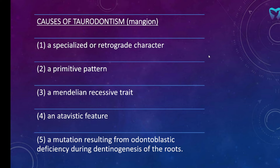The causes of taurodontism according to Mangion include: a specialized or retrograde character, because it used to happen in old times in Neanderthals, so it is a primitive pattern. It is also a Mendelian recessive trait. An atavistic feature, just like a vestigial tail — some humans are born with a vestigial tail at the end of the spine. Additionally, it may result from a mutation causing odontoblastic deficiency during dentinogenesis of the root, since odontoblasts form dentin, so a deficiency of odontoblastic cells may lead to taurodontism.